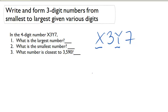What's the largest number we can make? We can put 9 in for X, because that's our biggest digit, and 9 in for Y, making 9, 3, 9, 7.